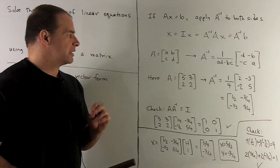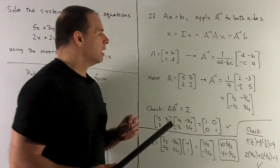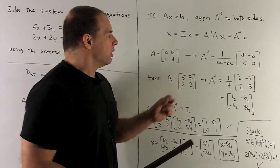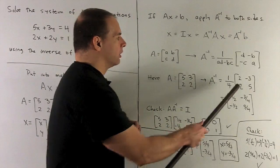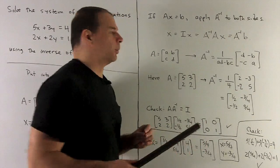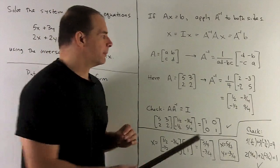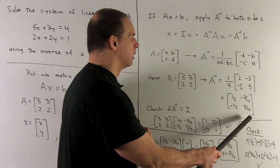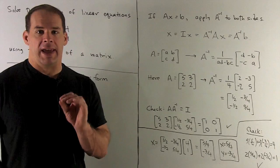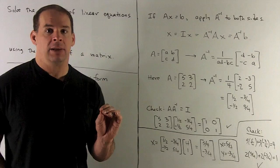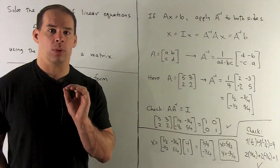In our case with 5, 3, 2, 2, the determinant is 10 minus 6 which gives us 4. So we have 1 fourth out front, then we flip the diagonal to get 2 and 5, and negate the off-diagonal giving minus 3 and minus 2. Pushing the 1 fourth through gives us our inverse matrix. You should check that A times A inverse gives the identity — A inverse times A also works, but one check is sufficient.